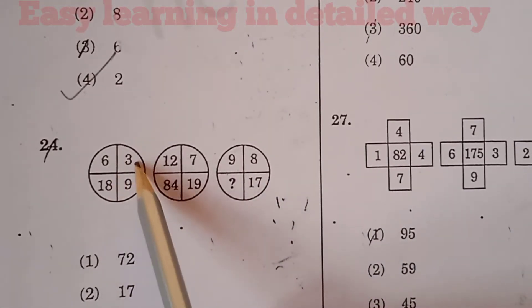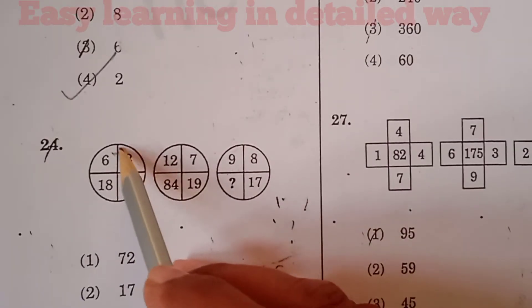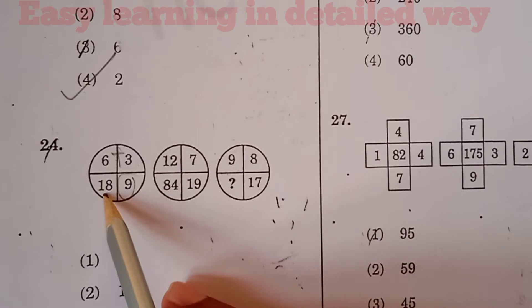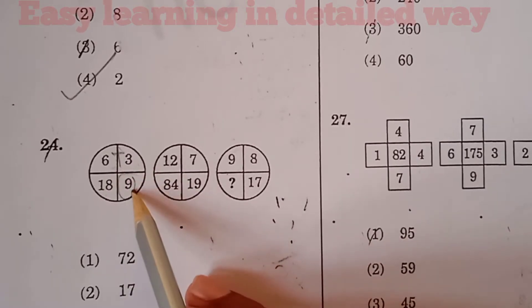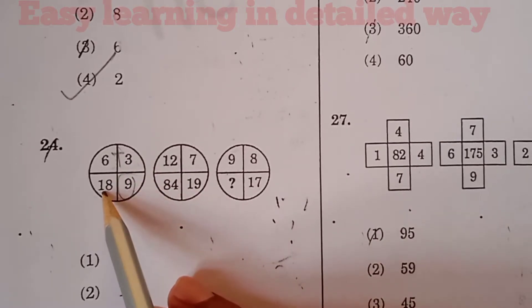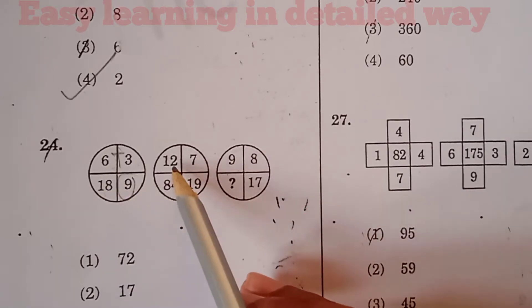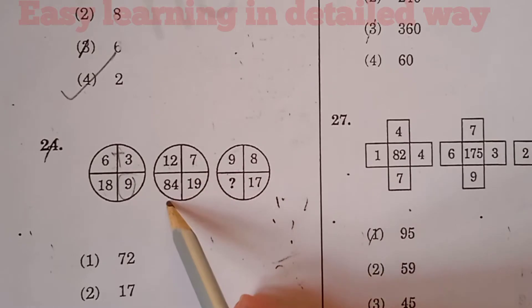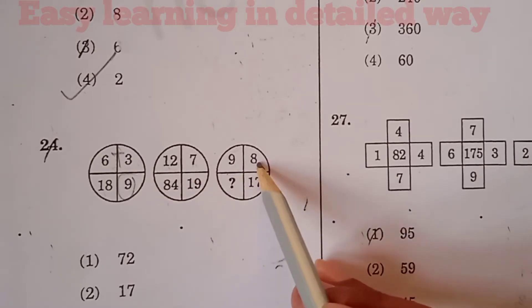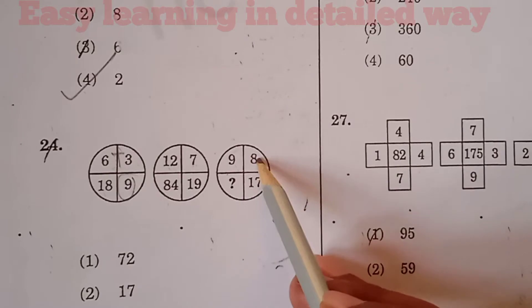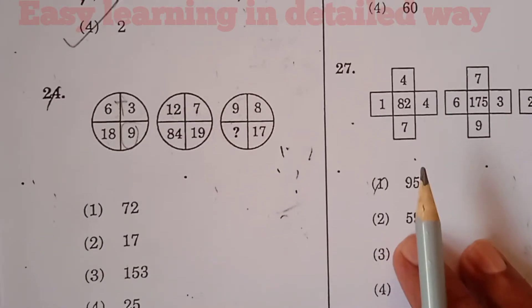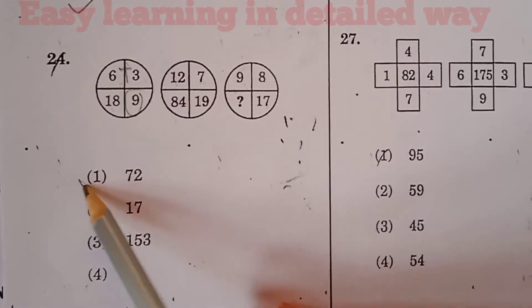For question 24, the pattern is: one position is occupied by the sum and one by the product. 6 plus 3 is 9 and 6 into 3 is 18. Similarly, 12 plus 7 is 19 and 12 into 7 is 84. In the same way, 9 plus 8 is 17 and 9 into 8 is 72. So the question mark is 72. Option 1 is the right answer for question 24.